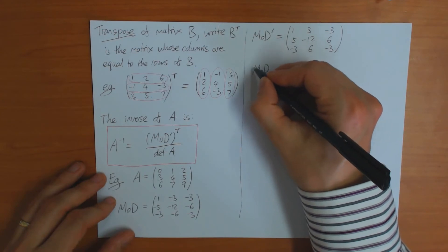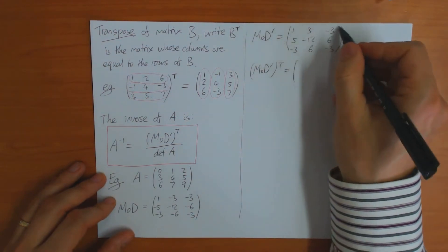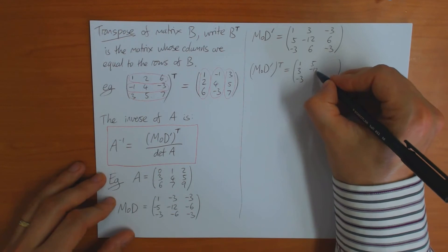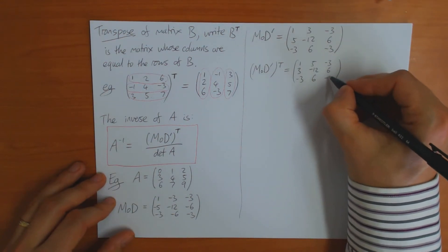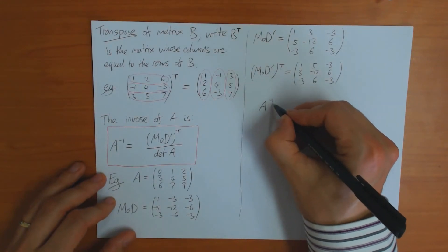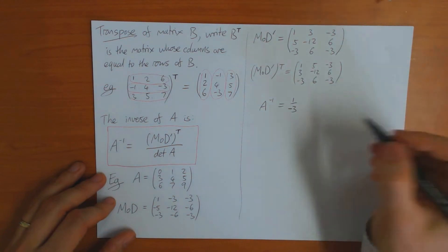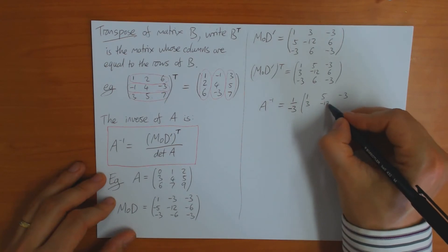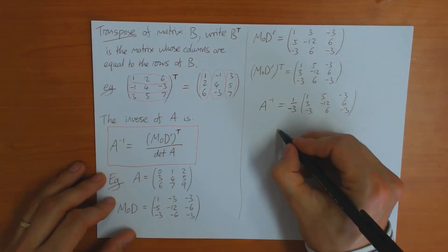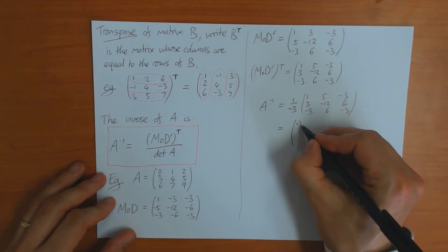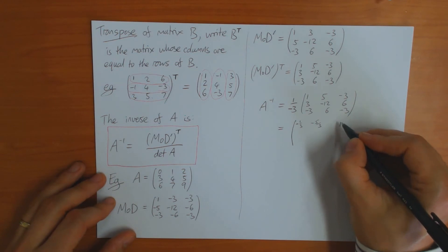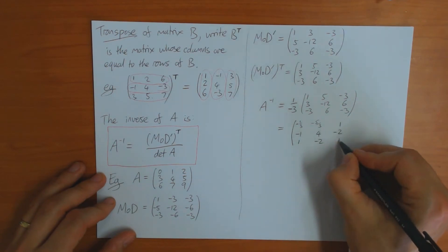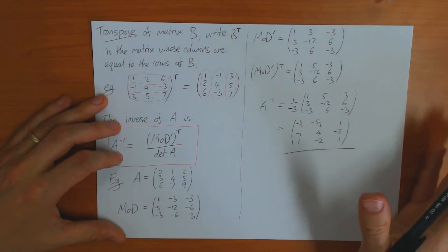Then transpose it — write the rows as columns — giving: 1, -3, -3, 3, 5, -12, 6, -3, 6, -3. Wait, the transposed matrix is: row 1 becomes column 1 (1, 3, -3), row 2 becomes column 2 (5, -12, 6), row 3 becomes column 3 (-3, 6, -3). Finally, divide by the determinant of A, which is -3. This gives A⁻¹ as: -1/3, -5/3, 1, -1, 4, -2, 1, -2, 1.